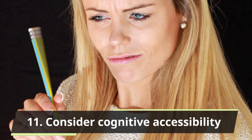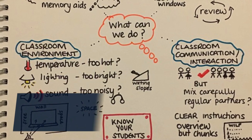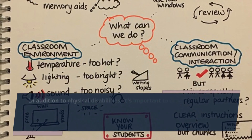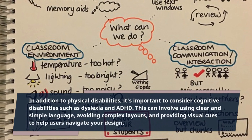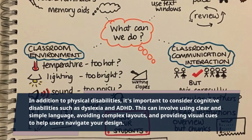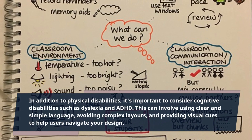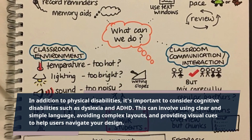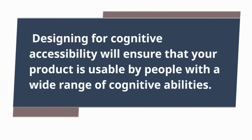Tip 11: Consider Cognitive Accessibility. In addition to physical disabilities, it's important to consider cognitive disabilities such as dyslexia and ADHD. This can involve using clear and simple language, avoiding complex layouts, and providing visual cues to help users navigate your design. Designing for cognitive accessibility will ensure that your product is usable by people with a wide range of cognitive abilities.